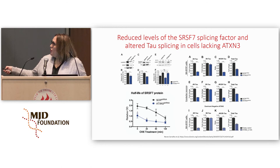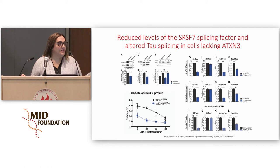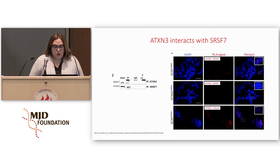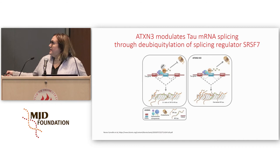We looked at the target of this factor — 4R and 3R mRNA — and we see that the 4R isoform, which involves inclusion of that exon, is indeed reduced in cells lacking Ataxin-3. Not the 3R, but the ratio — which is very relevant for disease — is perturbed. We saw this also in primary neurons cultured from mouse brains. When we silence Ataxin-3, the same thing happens. Using a catalytic mutant of Ataxin-3 that lacks catalytic activity, we see the same effect as when it is absent. We also see that the splicing factor and Ataxin-3 interact with two different methods, and they interact in the nucleus, which is where it makes sense.